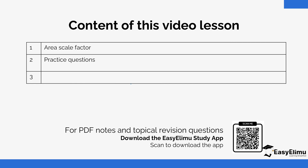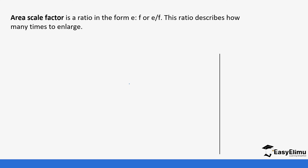Previously we looked at enlargement and also similar objects, so today we are going to look at area scale factor and also its relationship with linear scale factor. Area scale factor is a ratio in the form of E is to F, or E over F. This ratio describes how many times to enlarge especially a two-dimensional figure.